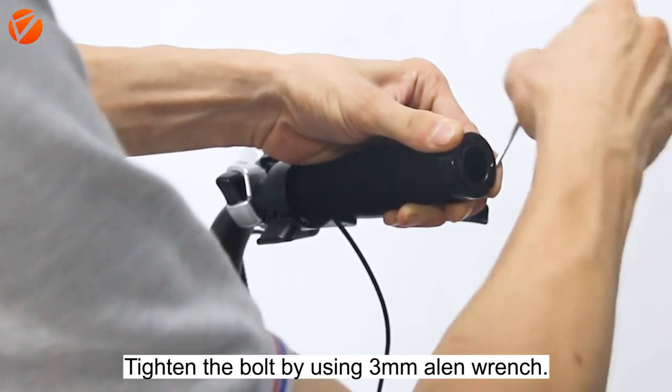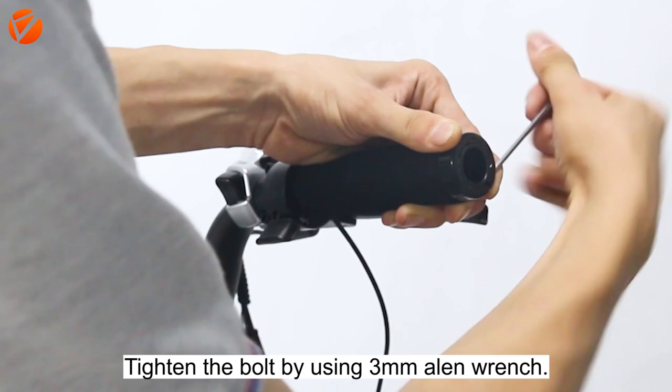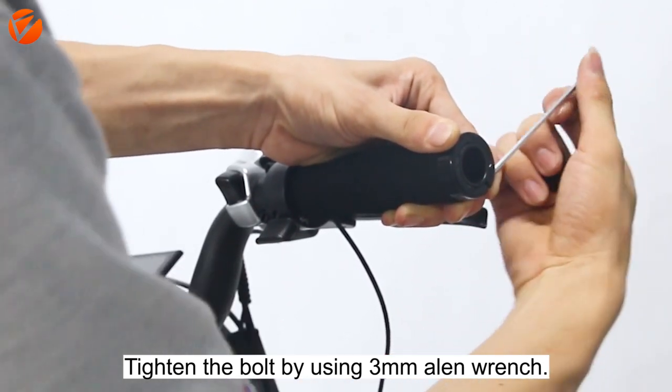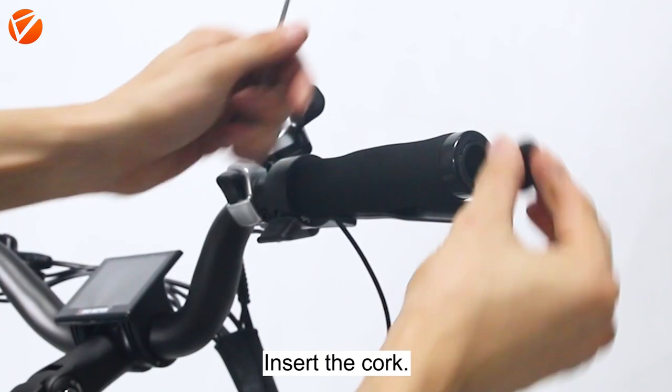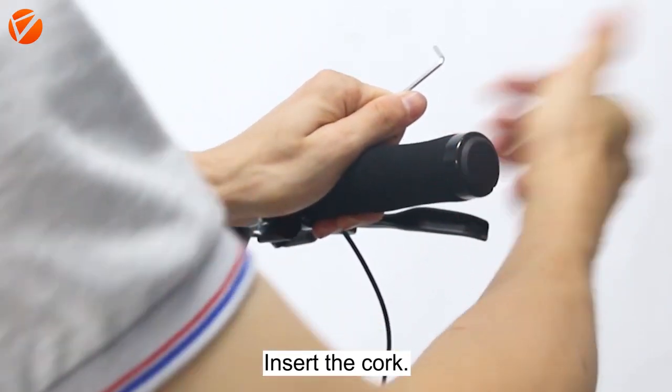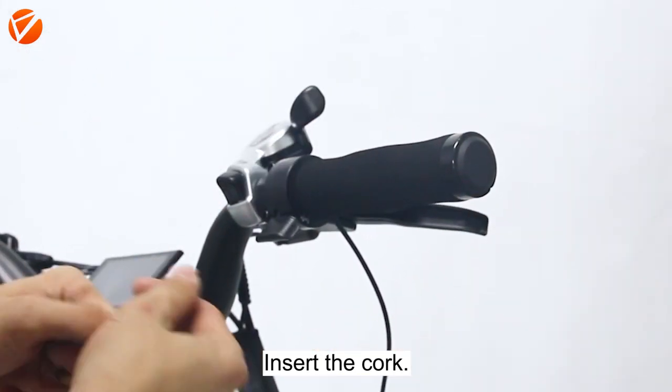Tighten the bolt by using a 3mm Allen wrench. Insert the hook.